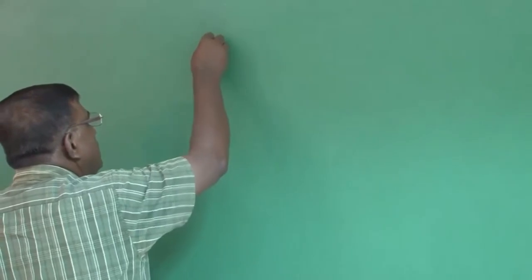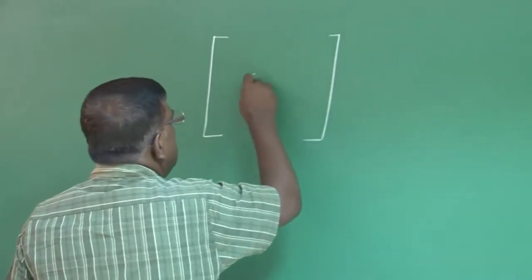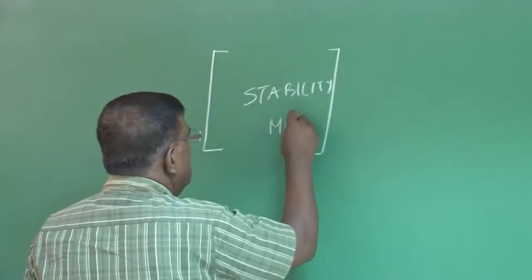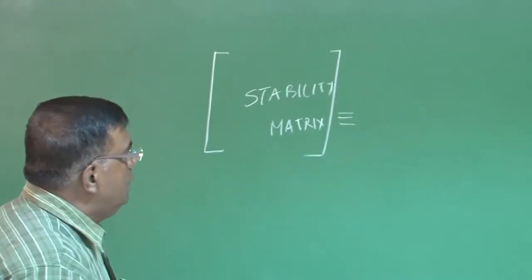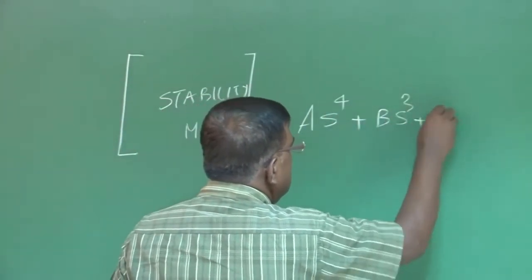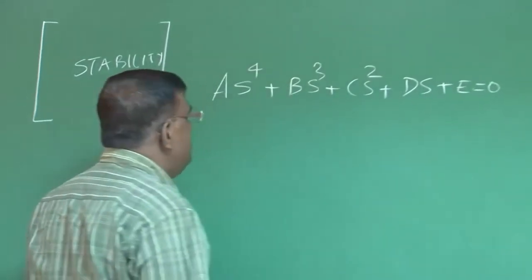Today, we will be discussing a very introductory understanding about the Stability Augmentation System. The basis is that when we took the determinant of the stability matrix, the exact solution gives an equation of the form S⁴ + BS³ + CS² + DS + E = 0, which is the determinant of that matrix.